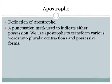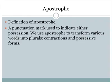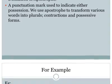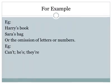First of all we must know about the definition of apostrophe. A punctuation mark used to indicate either position is called apostrophe. We use apostrophe to transform various words into plurals, contractions and possessive forms. For example, Harry's book, Sarah's bag.